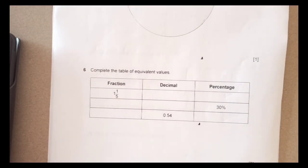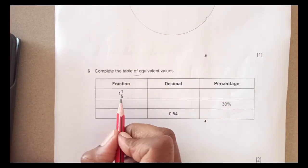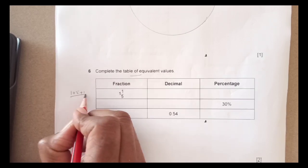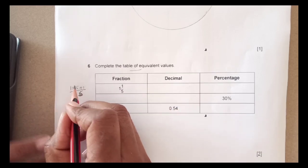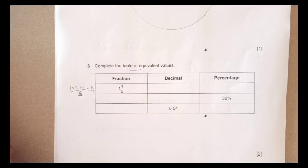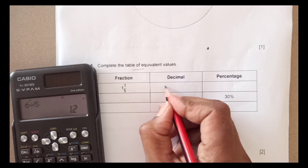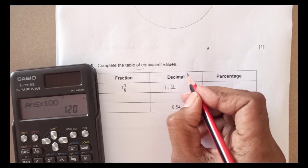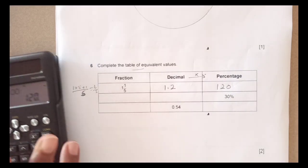Number 6: complete the table of equivalent fraction, decimal and percentage values. For the first row, the mixed number — we can write it as 1 times 5 plus 1 over 5, which gives 6 over 5. Then 6 divided by 5 as a decimal is 1.2. To change to a percentage, multiply by 100, giving 120%.